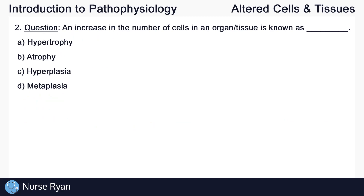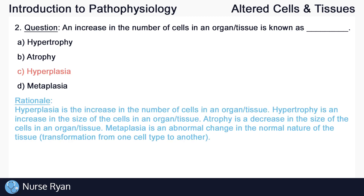Moving on to question number 2: an increase in the number of cells in an organ or tissue is known as? The answer here is C — hyperplasia. Hyperplasia is the increase in the number of cells in an organ or tissue.